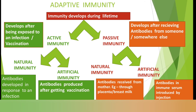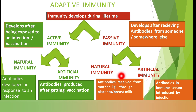Next is the natural and artificial means of passive immunity. As we said earlier, here we are not producing the antibodies; we are receiving antibodies from any other person or somewhere else. In natural passive immunity, it involves receiving antibodies from our mother through the placenta or breast milk, like IgG and IgA respectively. In artificial passive immunity, the antibodies are received from the plasma or serum of someone by injection.